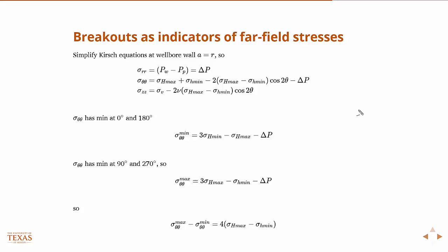It's just basically a factor of four difference between the maximum and minimum hoop stress and the maximum and minimum principal stress differences. So where you see breakouts are clear indicators of the directions of the maximum and minimum horizontal stress.